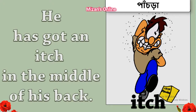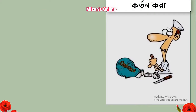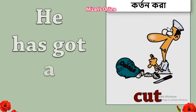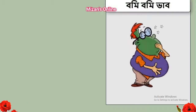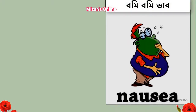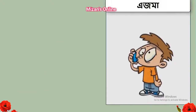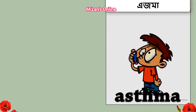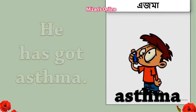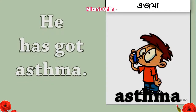Itch. He has got an itch in the middle of his back. Cut. He has got a cut. Nausea. He has got nausea. Asthma. He has got asthma.